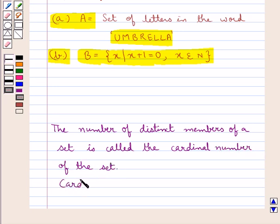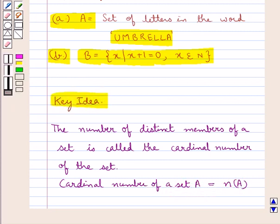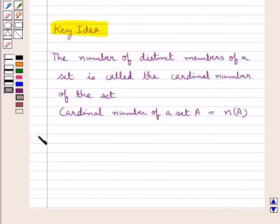The cardinal number of a set A is denoted by n(A). This is the key idea we use in this question. Let's move on to the solution.